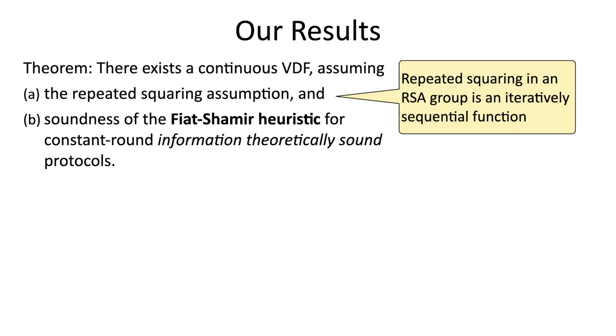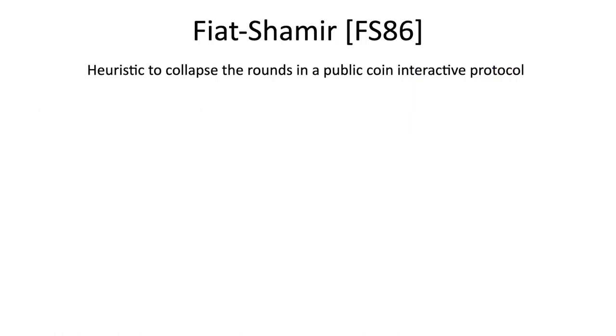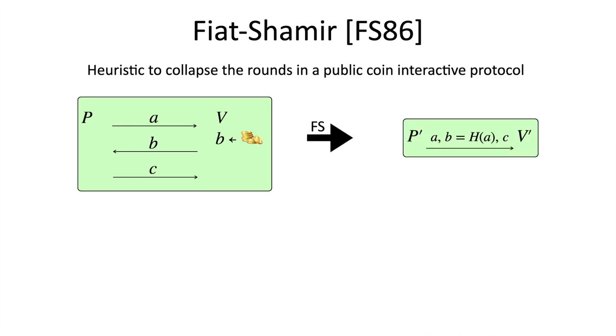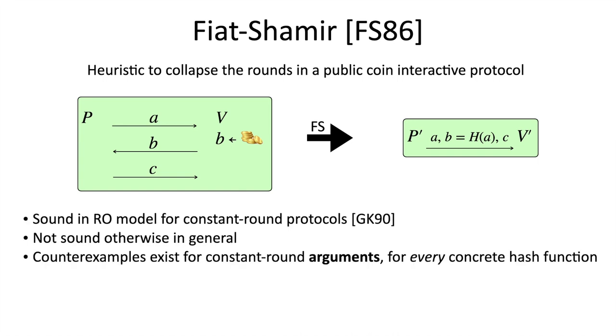For our second assumption, let me briefly discuss the Fiat-Shamir heuristic. This is a way to collapse rounds in public coin interactive protocols. For example, in the case of a three-round protocol, like the one shown here, where the prover sends the message A, the verifier responds with some randomness B, and the prover answers with the final message C, the Fiat-Shamir heuristic says that soundness is preserved when the verifier's message is replaced by a hash of the transcript so far. So in this case, B would be computed as a hash of A, and then the resulting protocol is non-interactive. For the case of constant round proofs, so information-theoretically sound protocols, this is sound in the random oracle model and in general believed to be true, and that's what we rely on. For the case of constant round arguments, or computationally sound protocols, counterexamples do exist. But for the case that we need, which is constant round proofs, it's believed to hold.